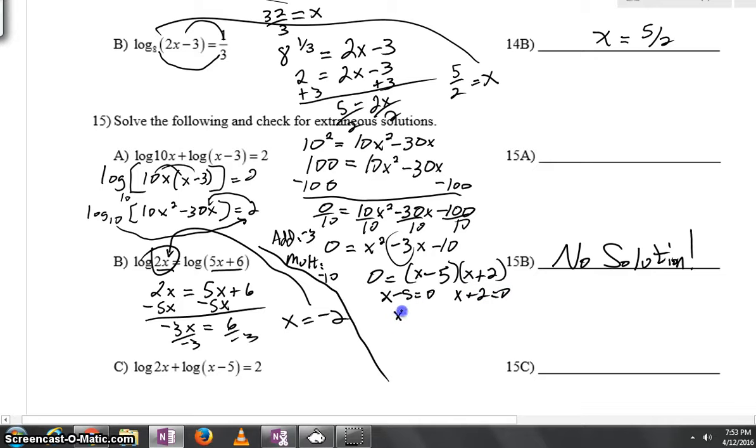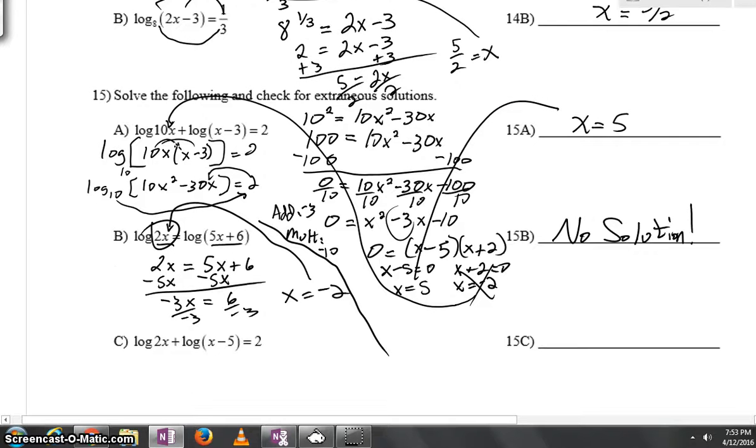And you'll get x equals 5, x equals negative 2. But here we go again, negative 2 yields negative answers inside. We have to throw that out. x equals 5, however, will have positive values inside the logs. We have to throw out one of our answers and then we're good to go.